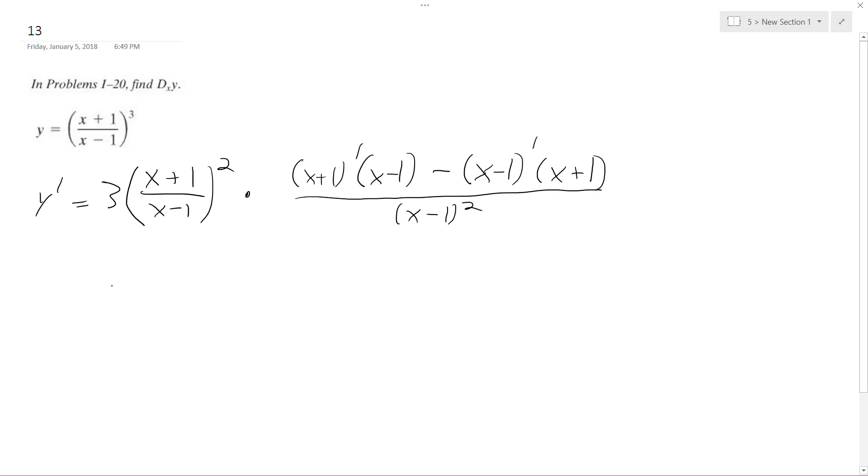So ultimately, y prime becomes the quantity x plus 1 over x minus 1 squared times 1, so basically these cancel out, so it just becomes x minus 1 minus,